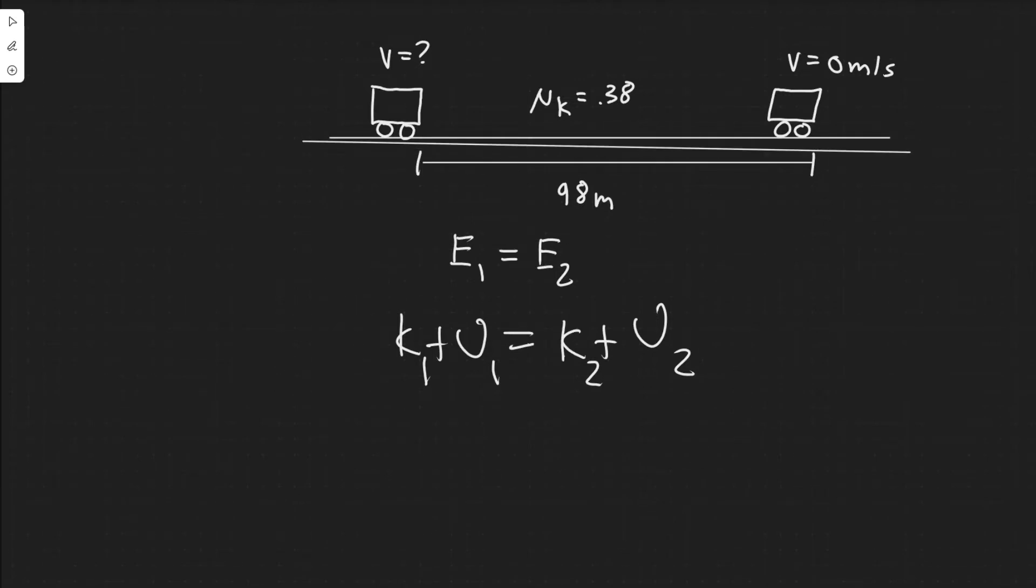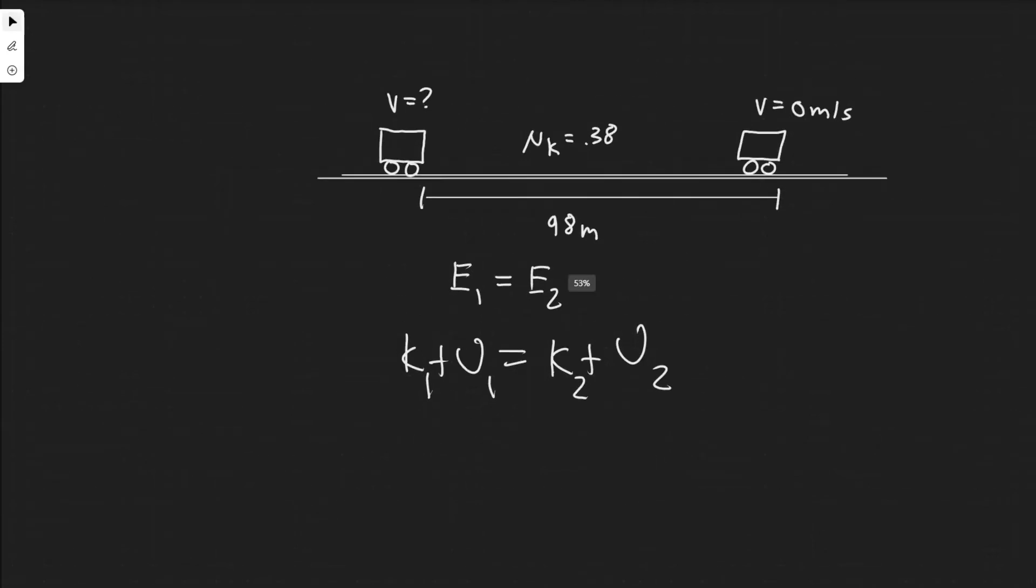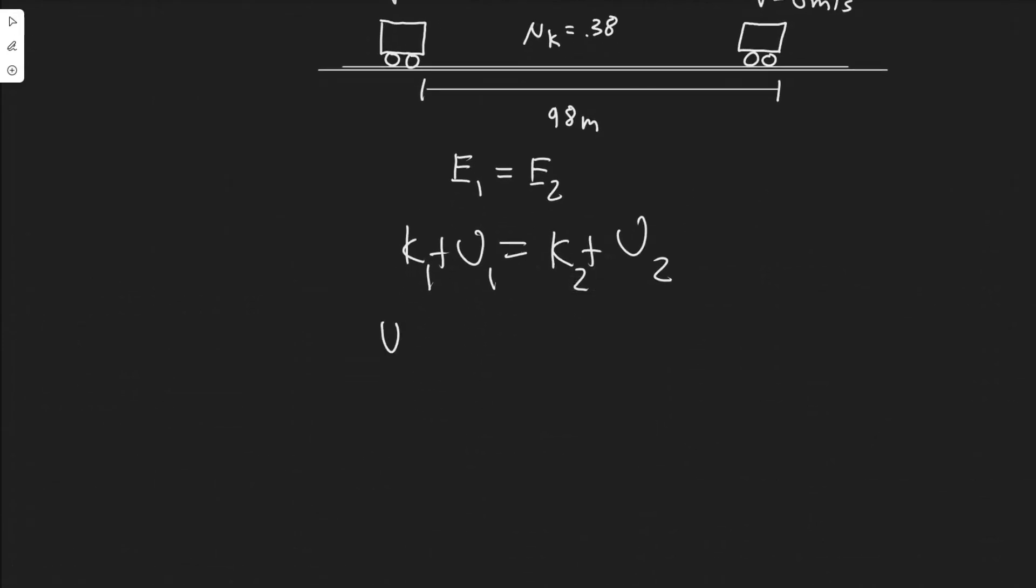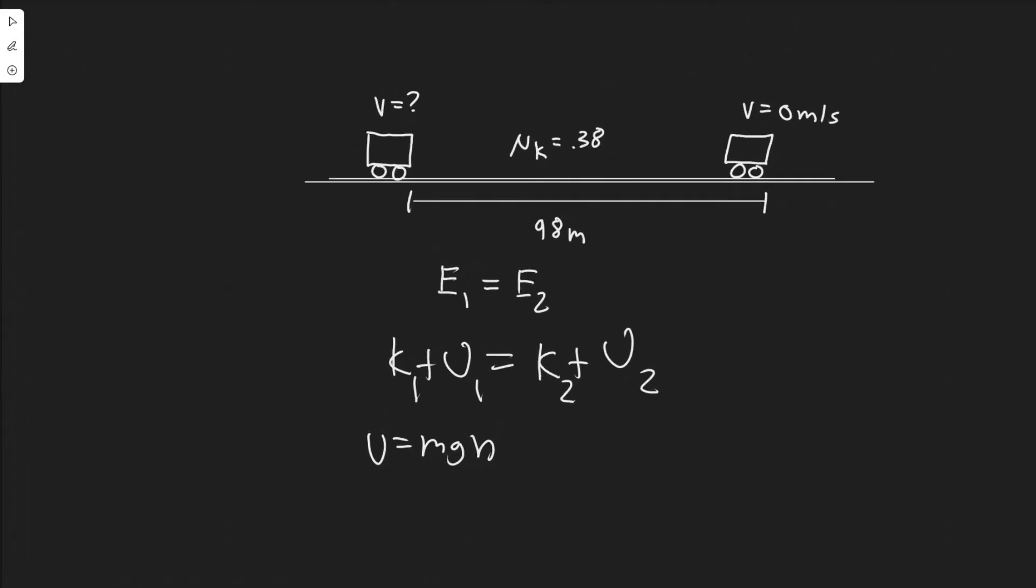The potential energy for both of these are going to be the same value, and we can assume this is basically zero. U is denoted by MGH, and H in this case, we can just pick any height. We can say the height is zero. The height doesn't change, so both of these U's are the same value and they cancel. All we're really looking at is the kinetic energies.